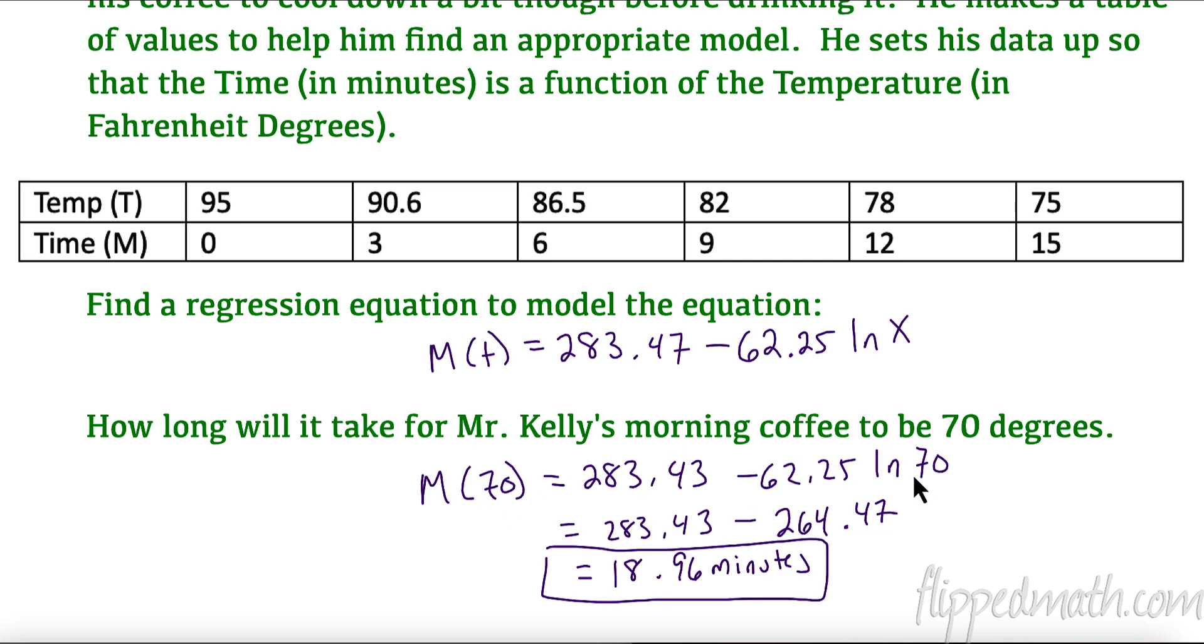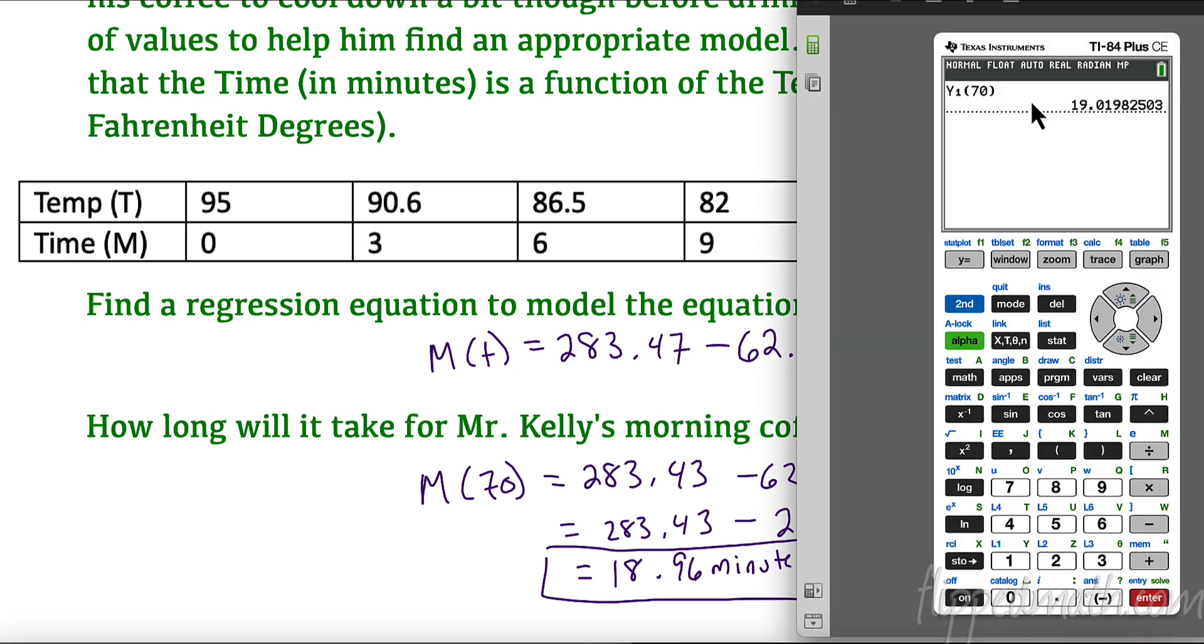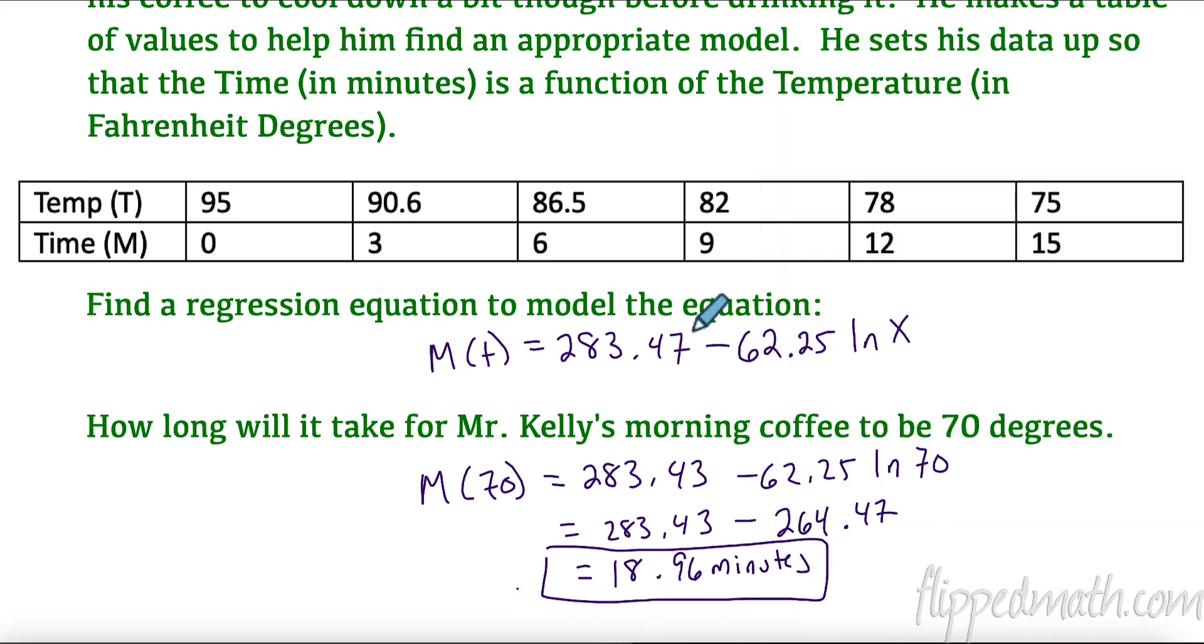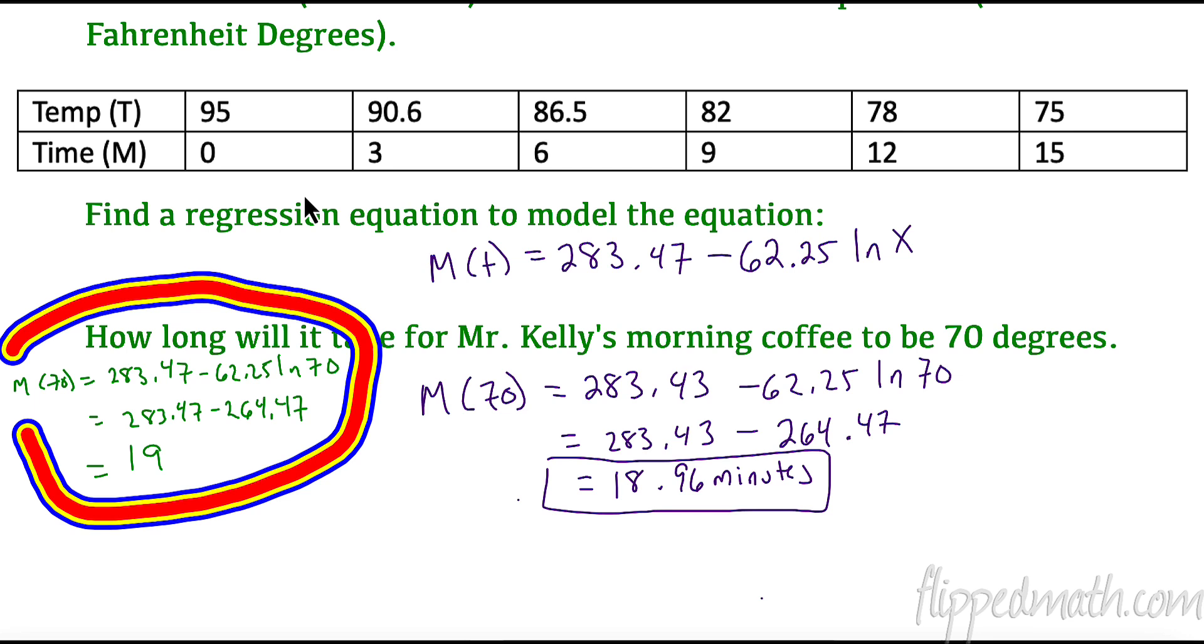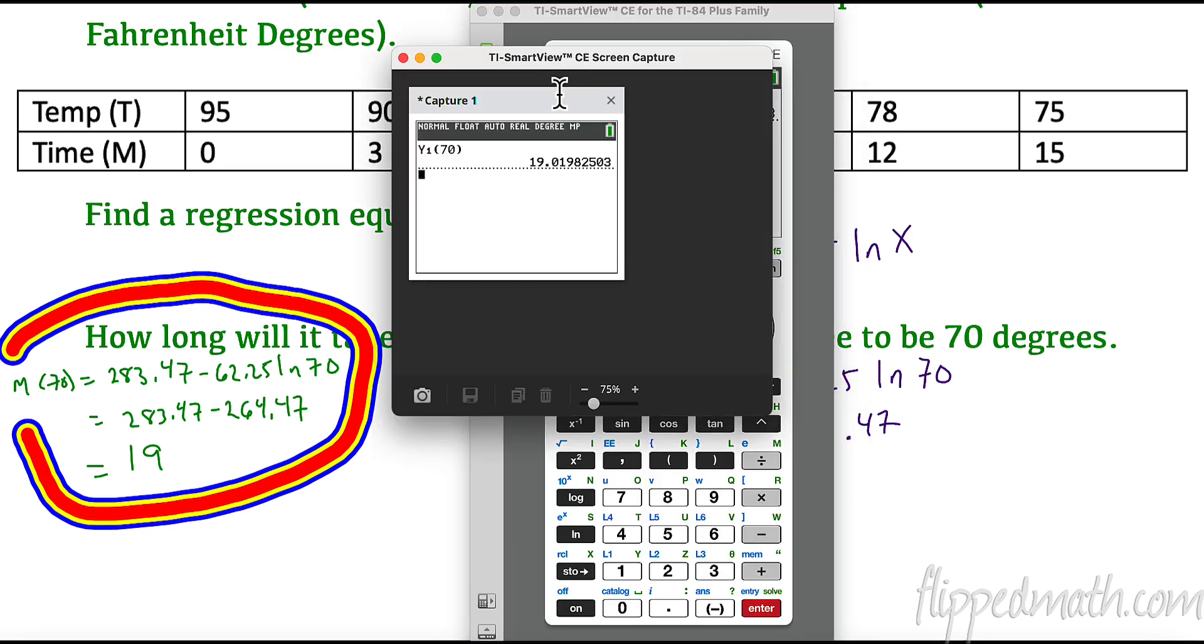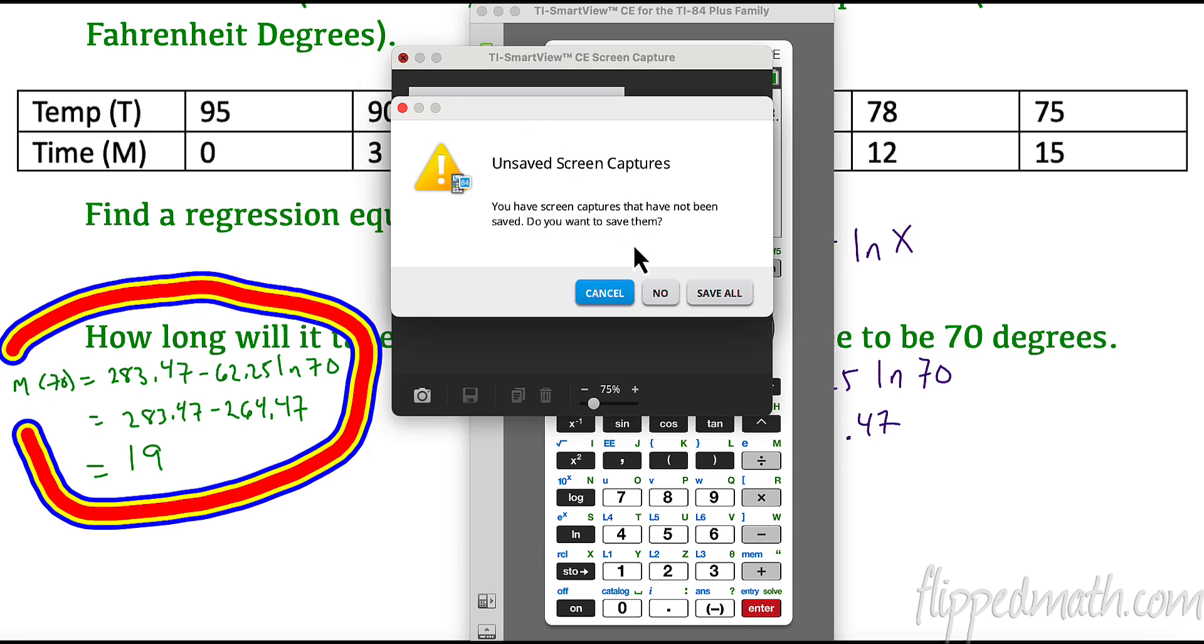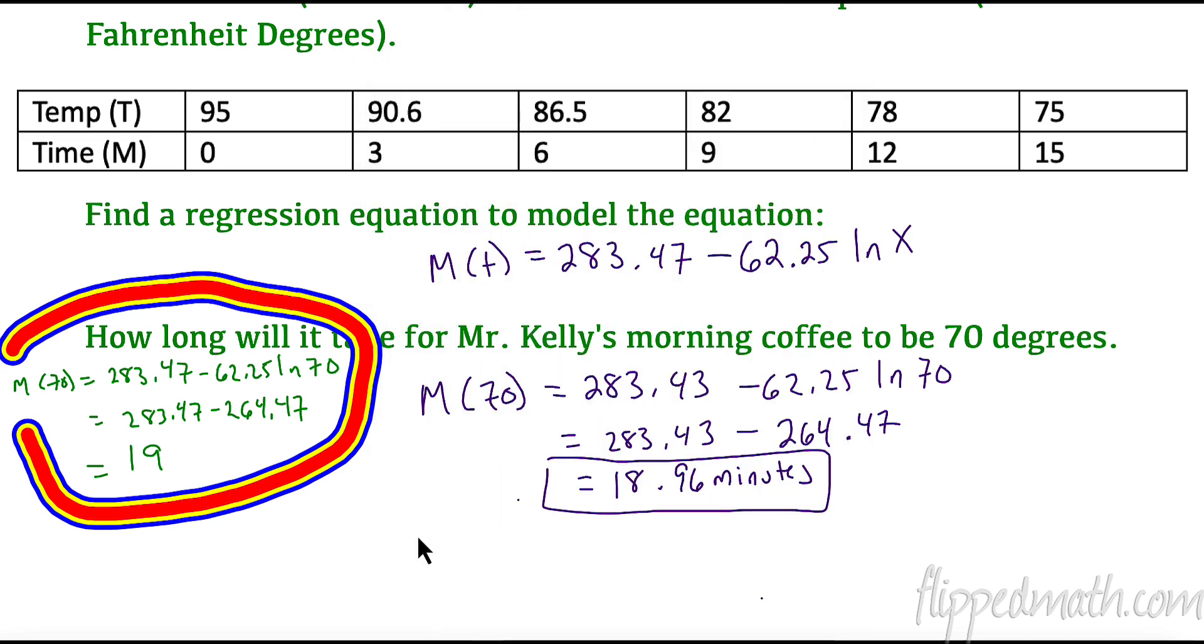But the key here is you want to try to round as least amount as possible and here's why. How long will it take till it gets to 70 degrees? I plug 70 in for x. I did this, I used rounding, I got 18.96. Is it vastly different than when I just plug it into my calculator? I got 19.02 minutes. Not really any different, it's about 19 minutes that's how long it's going to take. But I just want to show you the value of rounding. Try to round and wait until the end.